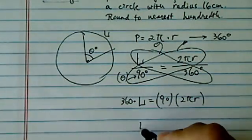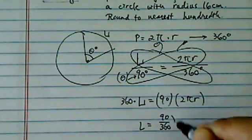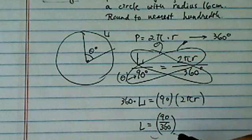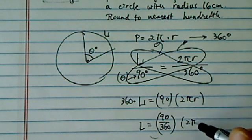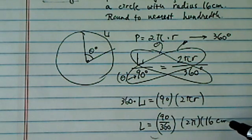And in order to find L, I'm going to divide. So 90 over 360, thus my quarter over here is 2 pi times r, which is 16 centimeters.